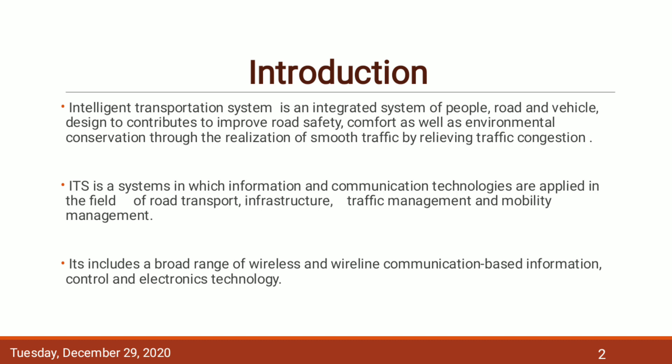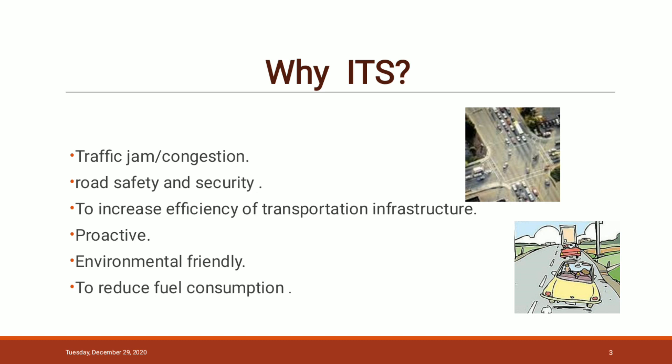Why do we need ITS? The interest in ITS comes from the problems caused by traffic congestion. Increasing motorization, urbanization, and population growth have increased traffic congestion, reduced the efficiency of road infrastructure, increased travel time, air pollution, etc. So to reduce all these problems, we are using ITS. It also improves road safety and security for all users. It is a proactive system because it detects problems and issues before they occur, and it is environmentally friendly as it reduces the environmental impact of transportation.